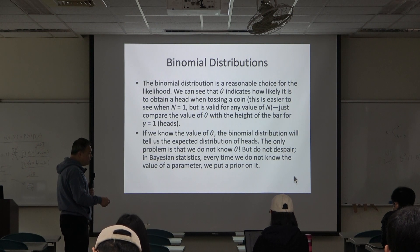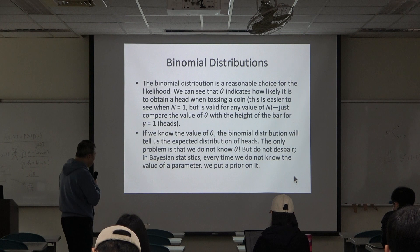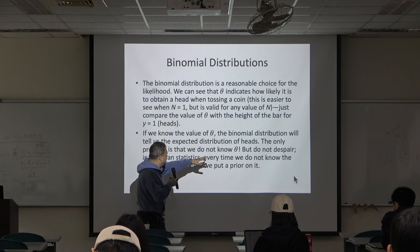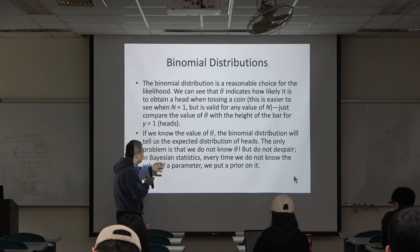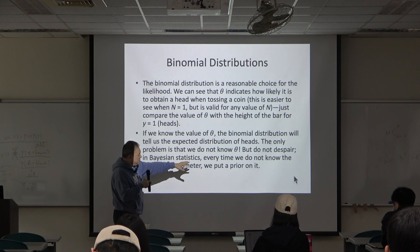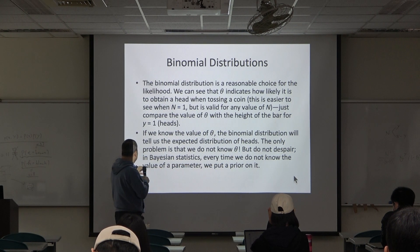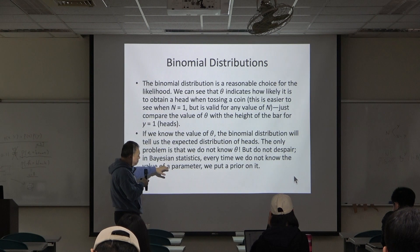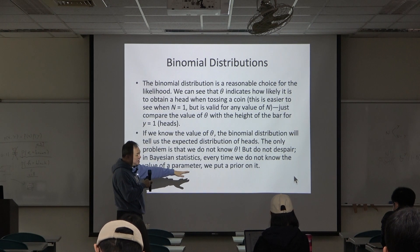In Bayesian statistics, every time we do not know the value of a parameter, we put a prior on it. This sentence is important: in Bayesian statistics, every time we do not know a value of a parameter, we put a prior on it. This is always the case.